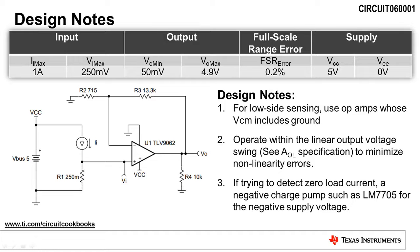Next, be sure to always check the linear output swing of the amplifier, which is usually given in the Conditions section of the AOL datasheet specification.